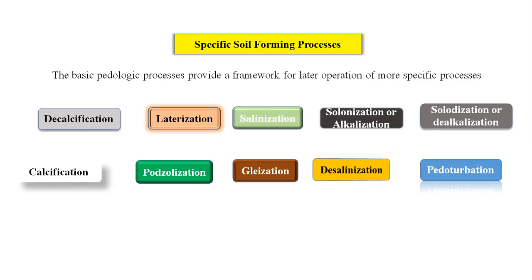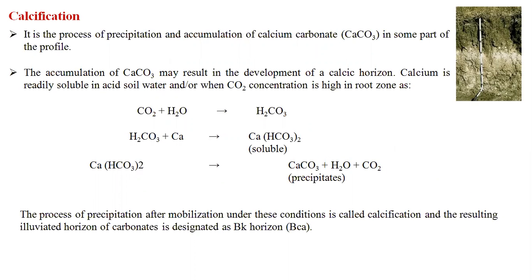The first process is calcification — a process of precipitation and accumulation of calcium carbonate in the soil profile. Calcium is readily soluble in acid water. Carbon dioxide joins with water to form H₂CO₃, which combines with calcium to form calcium bicarbonate. This calcium bicarbonate is then converted back into calcium carbonate plus water and CO₂.